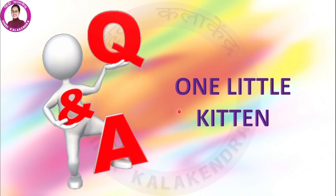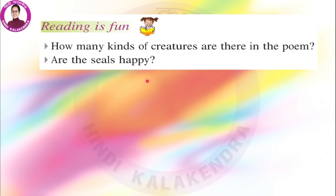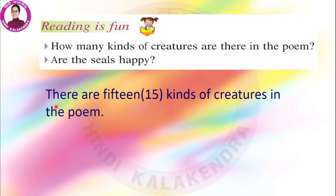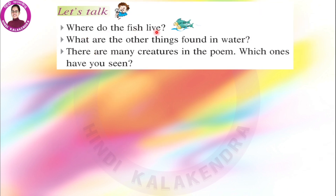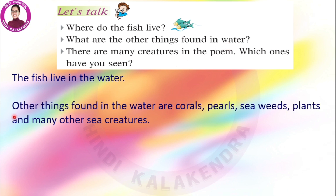Now let's do the question and answers of One Little Kitten. How many kinds of creatures are there in the poem? There are 15 kinds of creatures in the poem. Are the seals happy? No, the seals are sad. Where do the fish live? The fish live in the water. What are the other things found in the water? Other things found in the water are corals, pearls, seaweeds, plants and many other sea creatures.